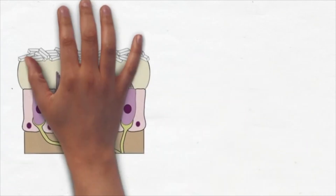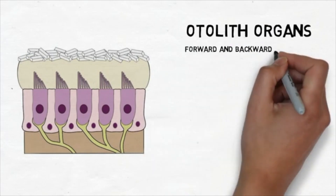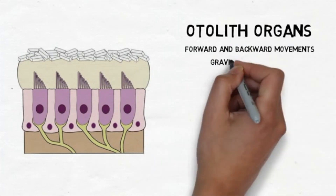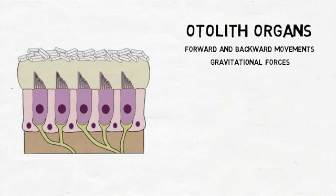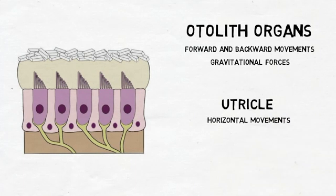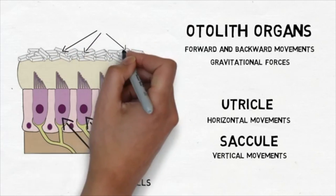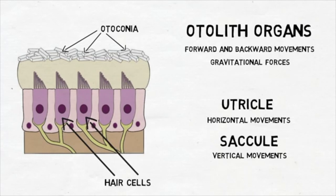The vestibular system uses two other organs known as the otolith organs to detect forward and backward movements and gravitational forces. There are two otolith organs in the vestibular labyrinth: the utricle, which detects movements in the horizontal plane, and the saccule, which detects movements in the vertical plane. Within the utricle and saccule, hair cells detect movement when crystals of calcium carbonate called otoconia shift in response to it, leading to movement in the layers below the otoconia and displacement of hair cells.